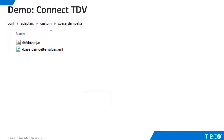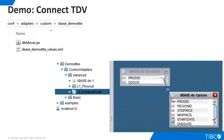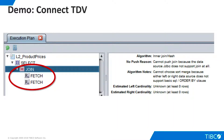We have created some simple level 1 physical views, and here we create a level 2 canonical view that joins two of our FoxPro tables. When we look at our execution plan, though, we see a problem. TDV is doing two separate fetch operations to our FoxPro database and performing the join itself. This will work, but it is inefficient. TDV attempts to push work down to underlying physical data sources whenever possible. Why isn't that happening here?